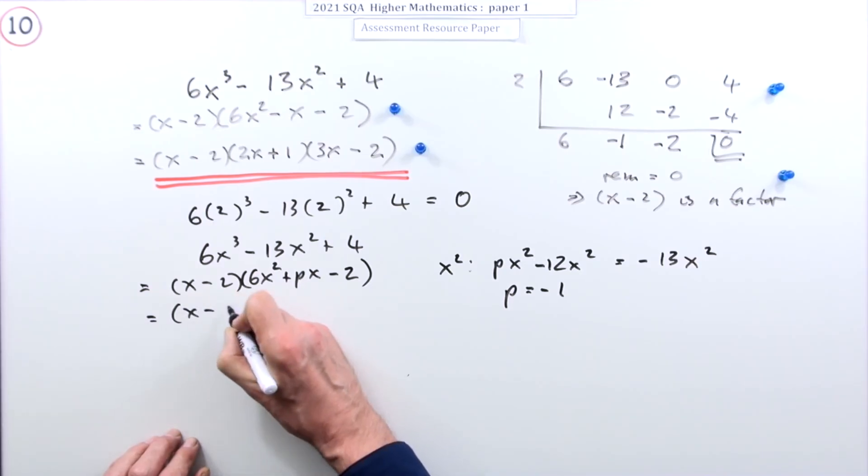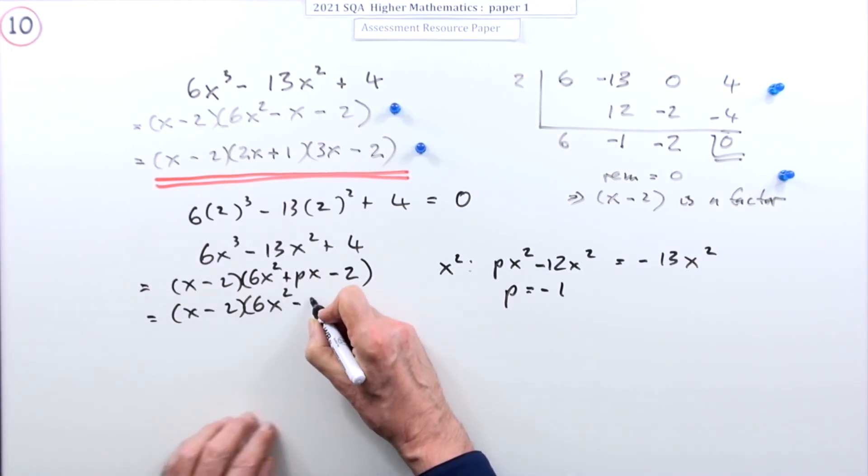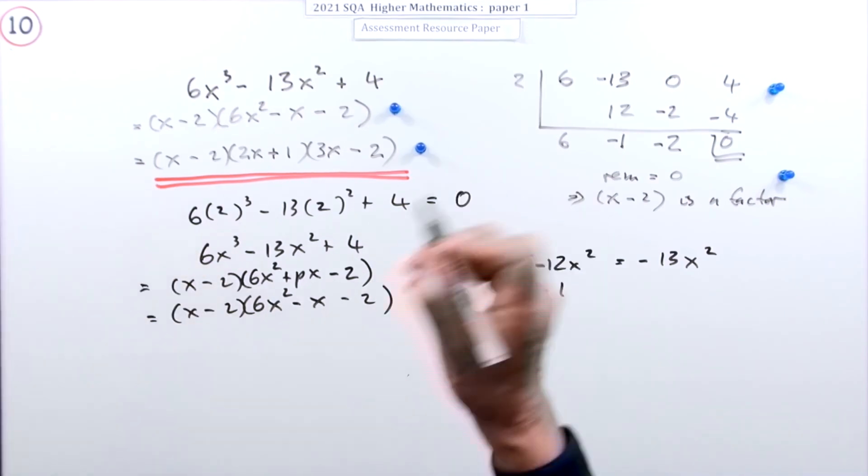So now you've got it: x minus 2 times 6x² minus x minus 2, and that's the same as before.